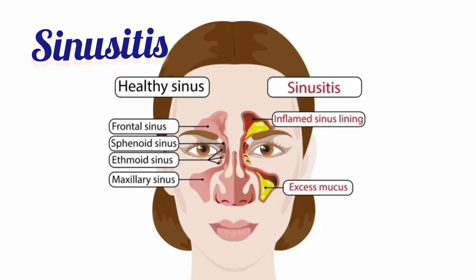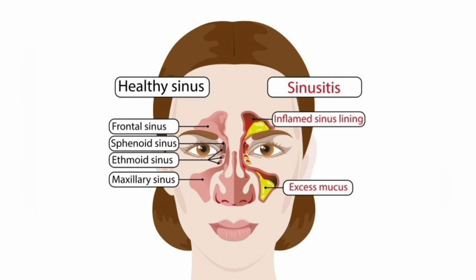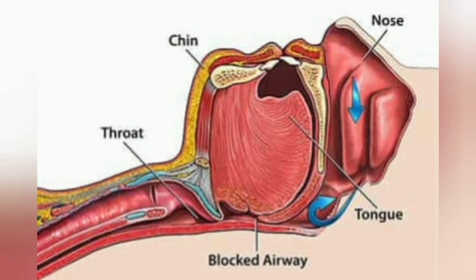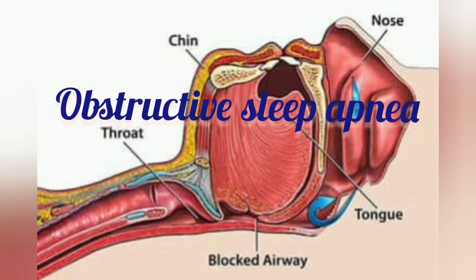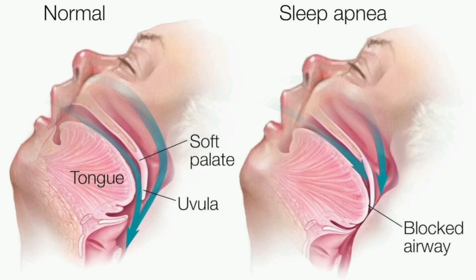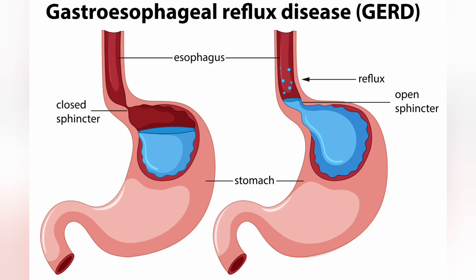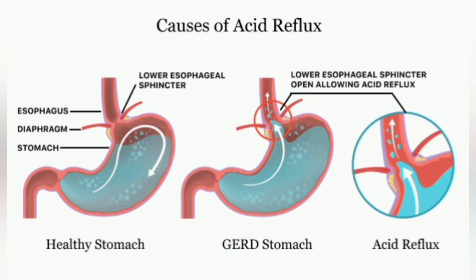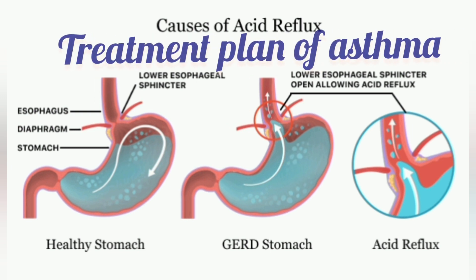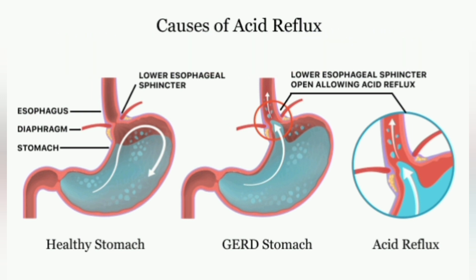Sinusitis worsens asthma symptoms and makes treatment less effective. Asthmatic patients are at higher risk of developing obstructive sleep apnea. GERD — that is gastroesophageal reflux disease — also worsens asthma symptoms, so it should be included in the treatment plan of asthma.